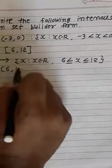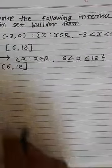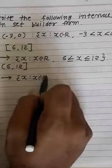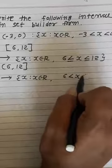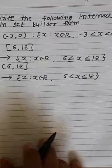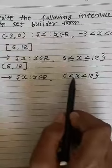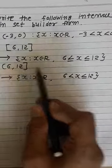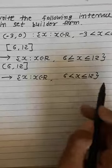Third question: open-close interval (6, 12]. In set builder form: {X | X belongs to R, 6 < X ≤ 12}. Here 6 is open so we use strictly less than, and 12 is in closed interval form so we use less than or equal to.